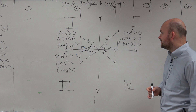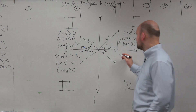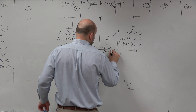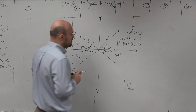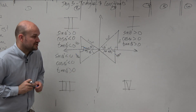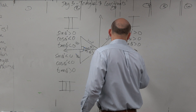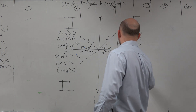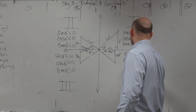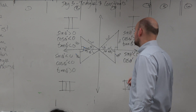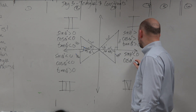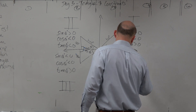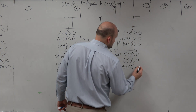In the fourth quadrant, we have a negative opposite and a positive adjacent. So sine of theta prime is going to be less than zero, cosine of theta prime is going to be greater than zero, and tangent of theta prime is less than zero.